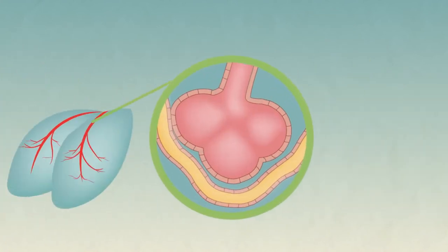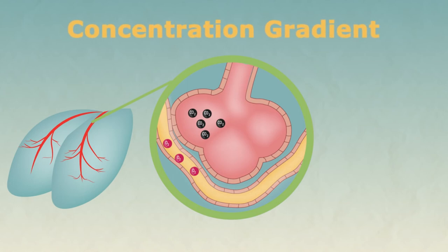The blood needs to be taken away from the exchange area quickly so that you maintain the concentration gradient between the two areas. Diffusion happens quickly when there is lots of gas in one place and not very much in the other. This is called the concentration gradient.